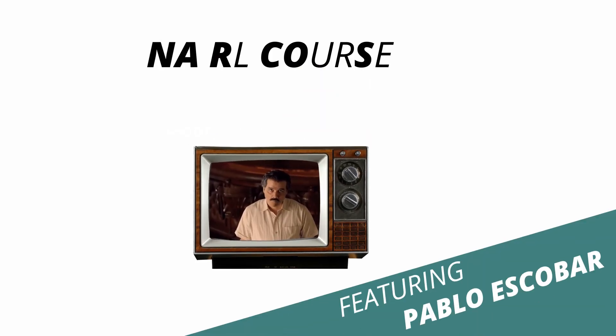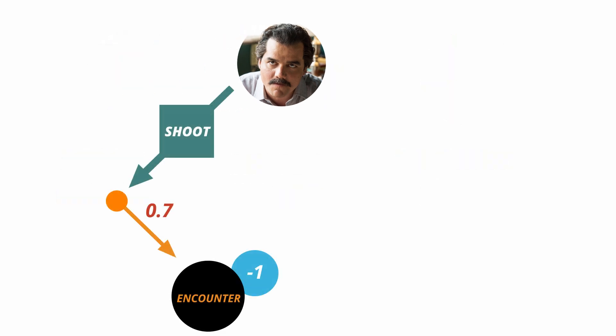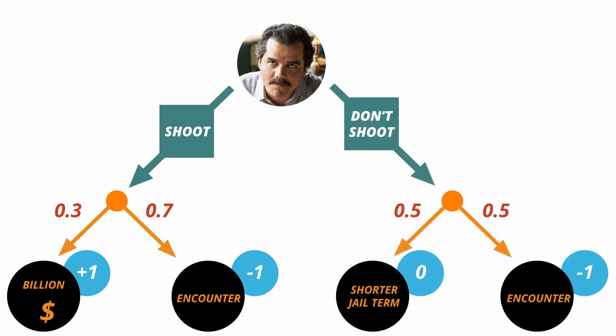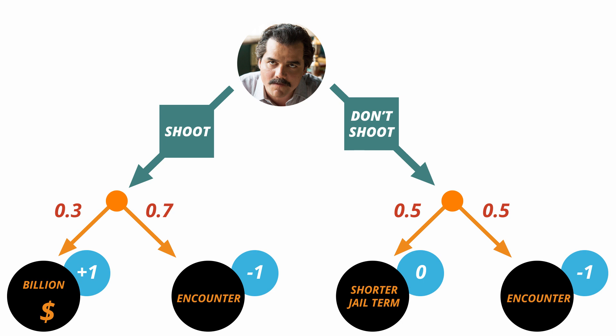So it's time for our little quiz. Our famous Mexican drug mafia Pablo Escobar is in trouble. He only has a single bullet left. If he aims at the cops, the chances that he's dead are 70 percent, but if he's successful, he gets his billion dollars back. On the other hand, if he puts the gun down, then there are 50-50 percent chances of getting encountered or serving a shorter jail term. So what is the best action for him? Well, if you have calculated, you will find that shooting the cop is the best action with the action value of minus 0.4. The answer is explained in the blog.